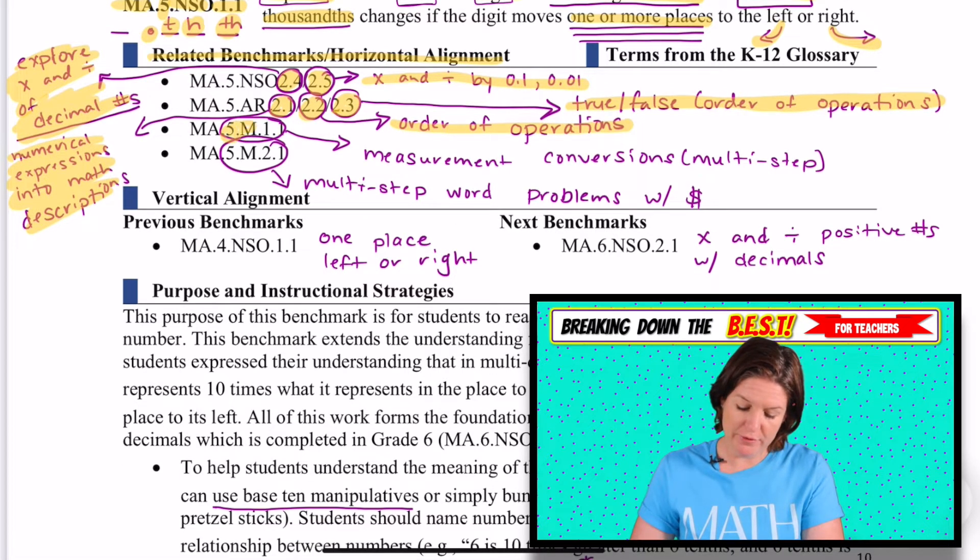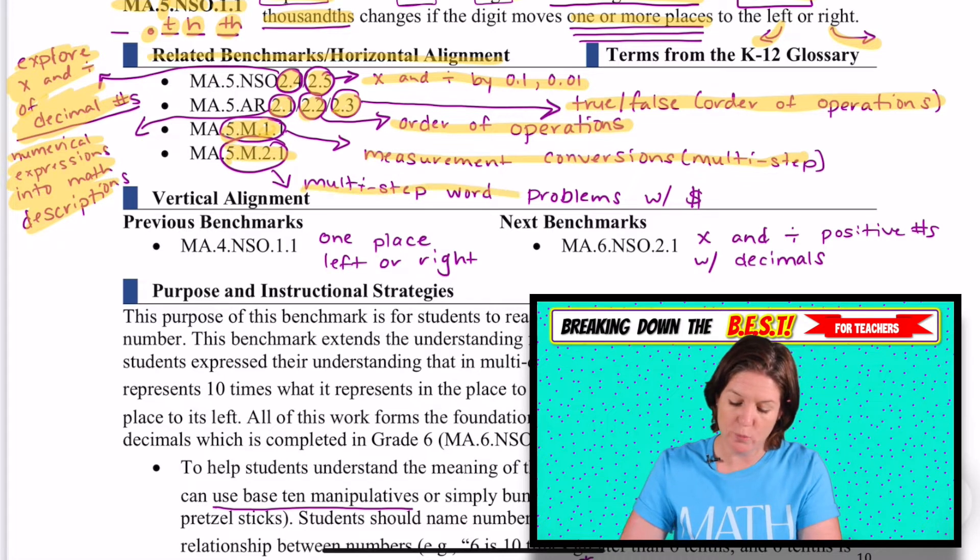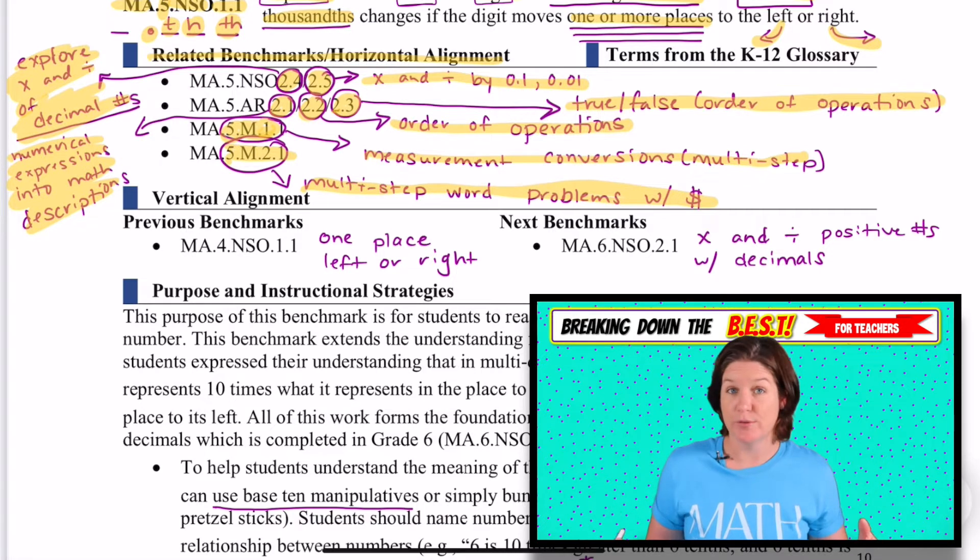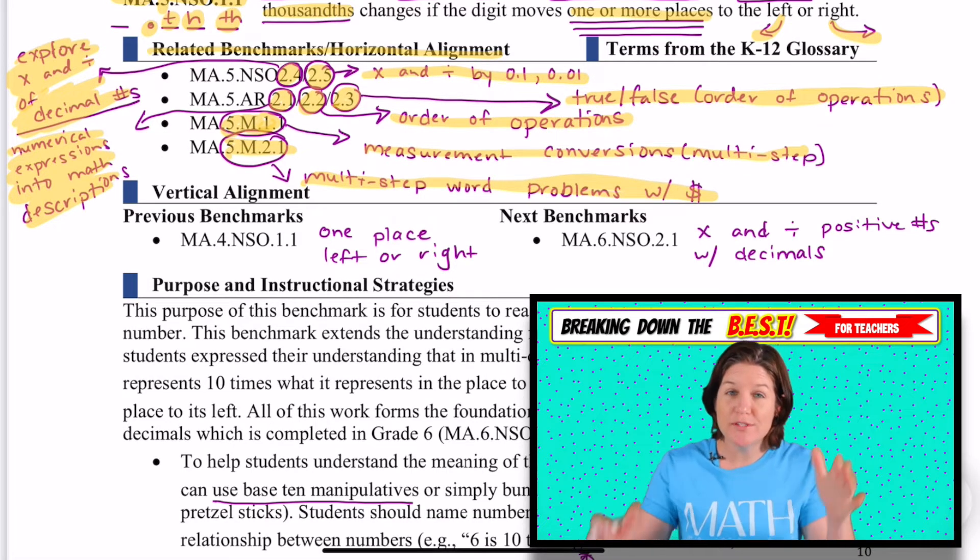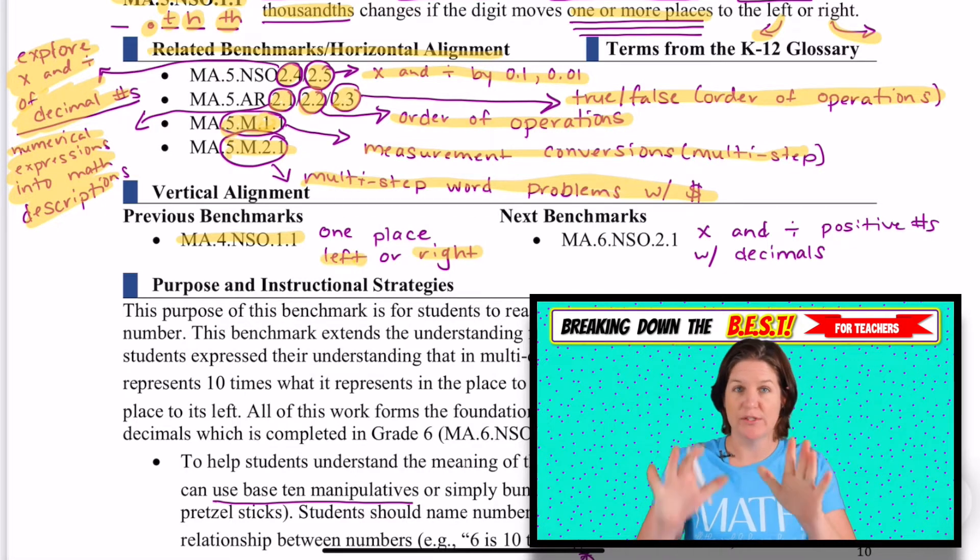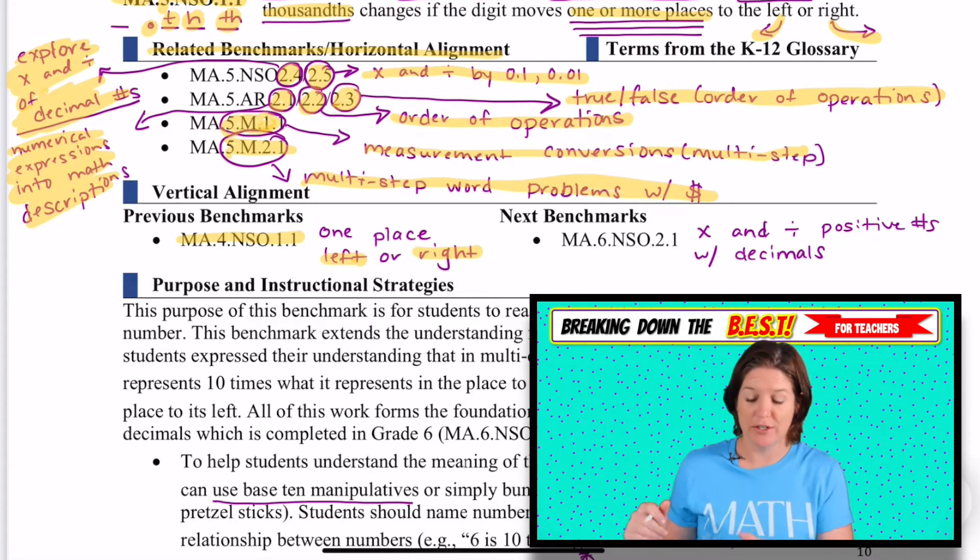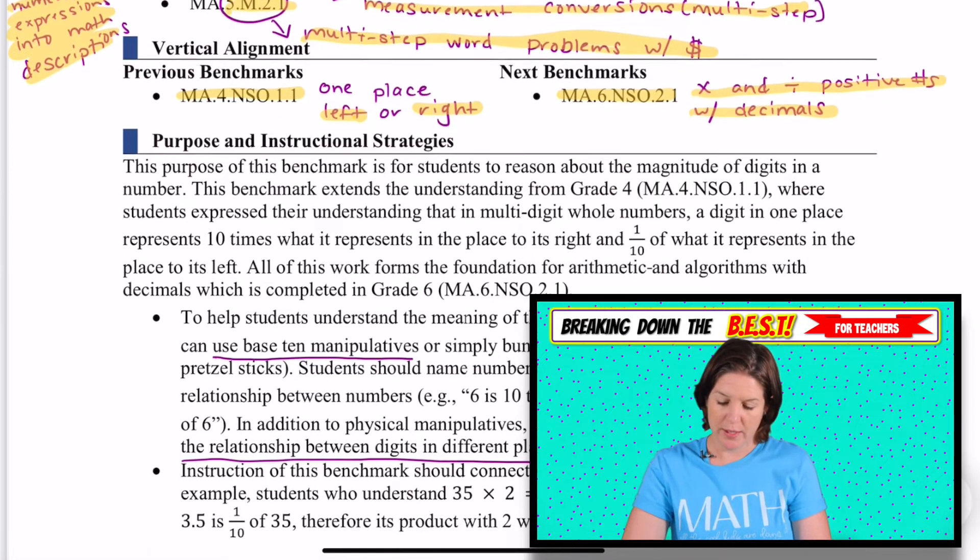Also we have 5.M.1.1, that is measurement conversions, which will be multi-step measurement conversions. And M.2.1 will be multi-step word problems with money. You can see all of which are using decimals. So that's why it's related here. This one we really got to make sure we've got it because we're going to be using the understanding of place value throughout. Now in fourth grade, where are they coming from? Well in fourth grade we're working with multi-digit whole numbers, so no decimals with this kind of standard in fourth grade. And we're only going one place left or right, so it's either 10 times less or 10 times greater. And then in sixth grade, they'll be moving up to multiplying and dividing positive numbers with decimals.